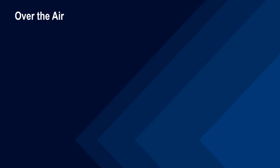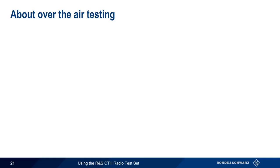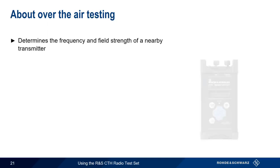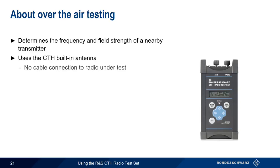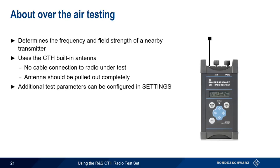The final CTH test mode we'll look at is Over-the-Air Testing. Over-the-Air Testing determines the frequency and field strength of a nearby transmitter using the CTH's built-in antenna, which means no cable connection is required between the CTH and the radio under test. The CTH's internal antenna should be pulled out completely for this measurement. Frequency and field strength are shown by default, with additional test parameters such as Max Hold being configured under the Settings menu.